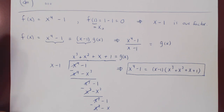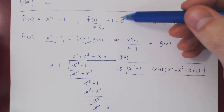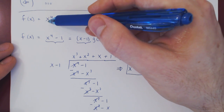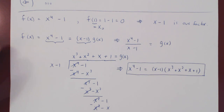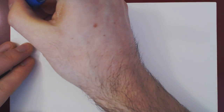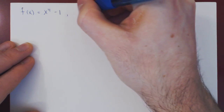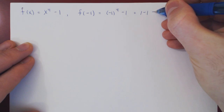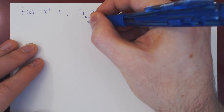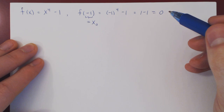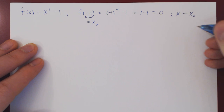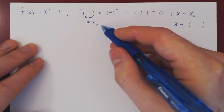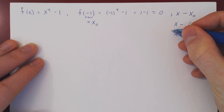Now there's something interesting here. Since 4 is an even power, f of minus 1 gives us negative 1 to the 4, which is plus 1 minus 1, which is also zero. So we have another zero at negative 1. This gives us another free factor: x minus x₀ where x₀ is negative 1, which means our free factor is x plus 1.